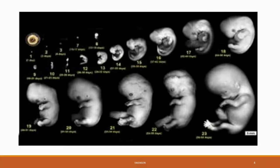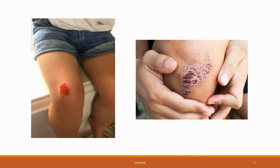Through a variety of biological processes, cells begin to take on unique roles such as forming into heart cells, skin cells, and brain cells. Cell replication and specialization is not only important for the development of multicellular organisms, but also for the repair and replacement of old cells.